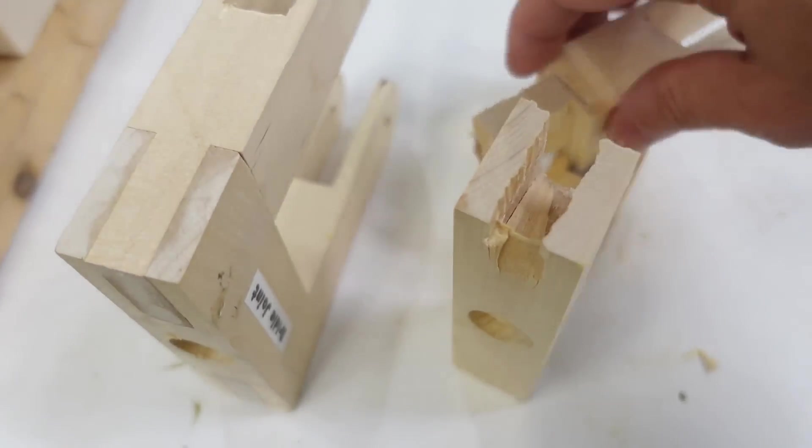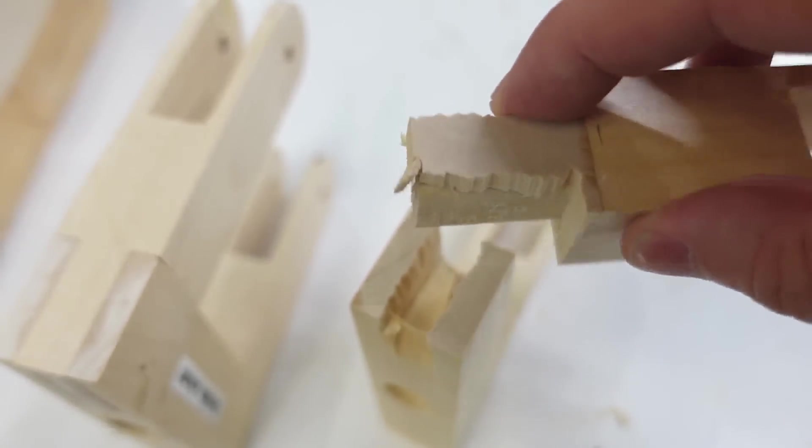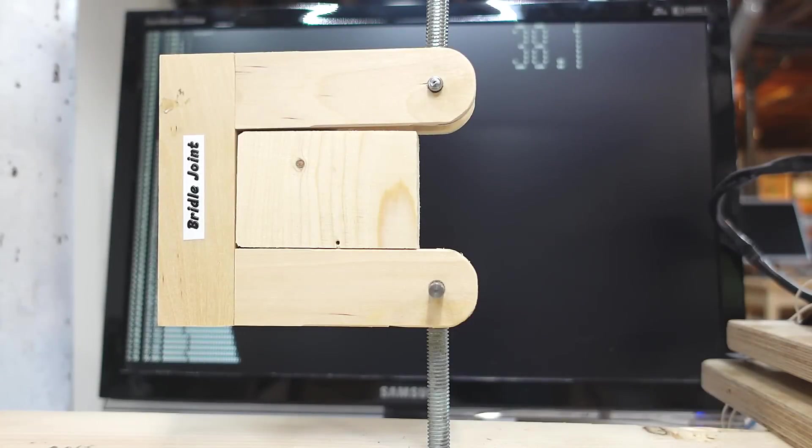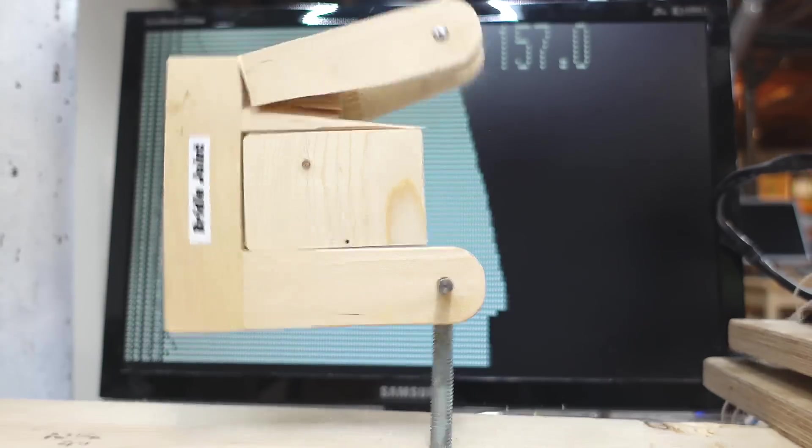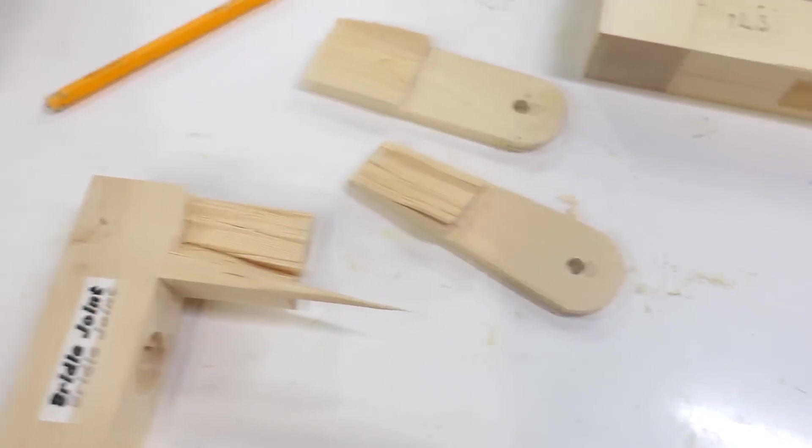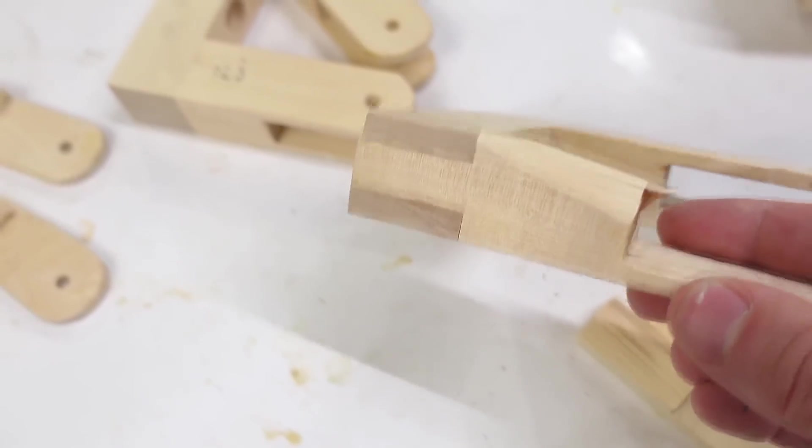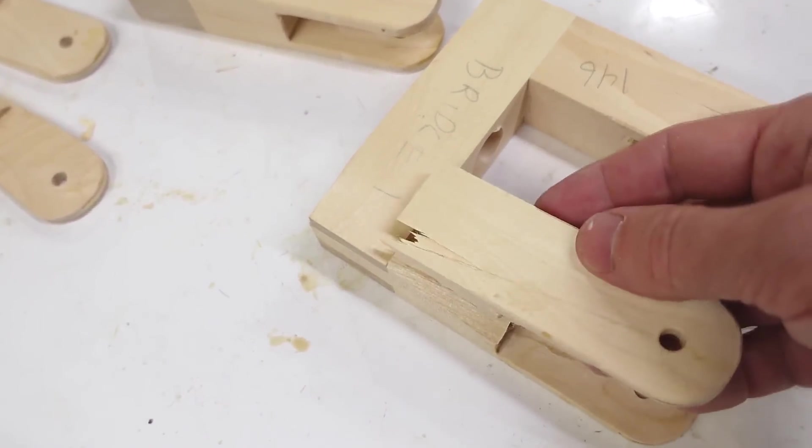Next, the bridle joint which doesn't have this extra piece of wood on top here. But, I don't think that held much. That's more than the last one already. This one failed a lot like the other bridle joint with the outside part just kind of popping off.